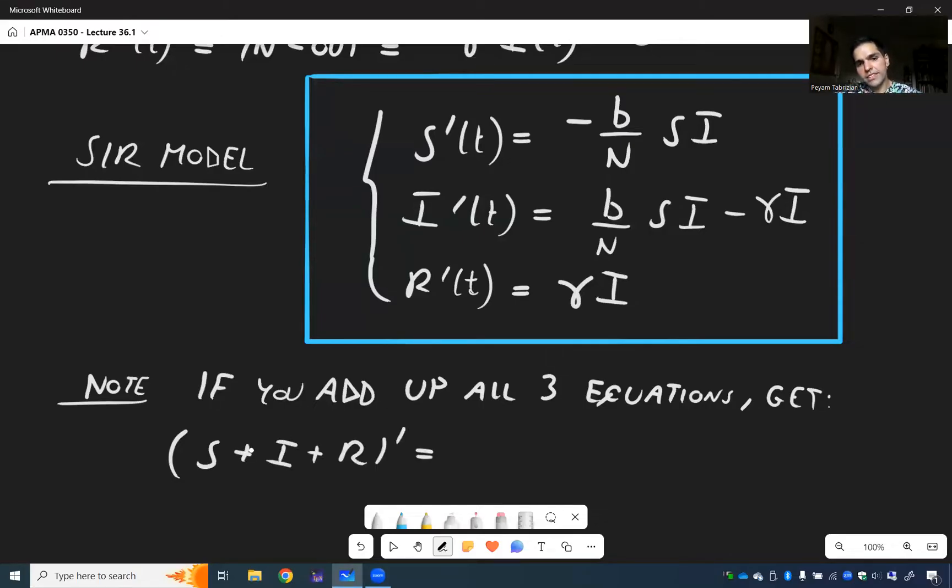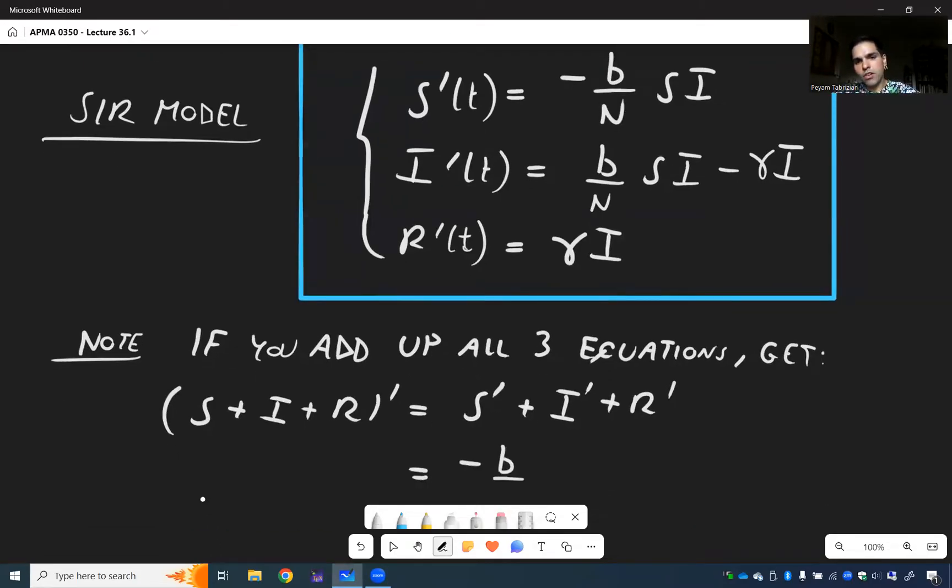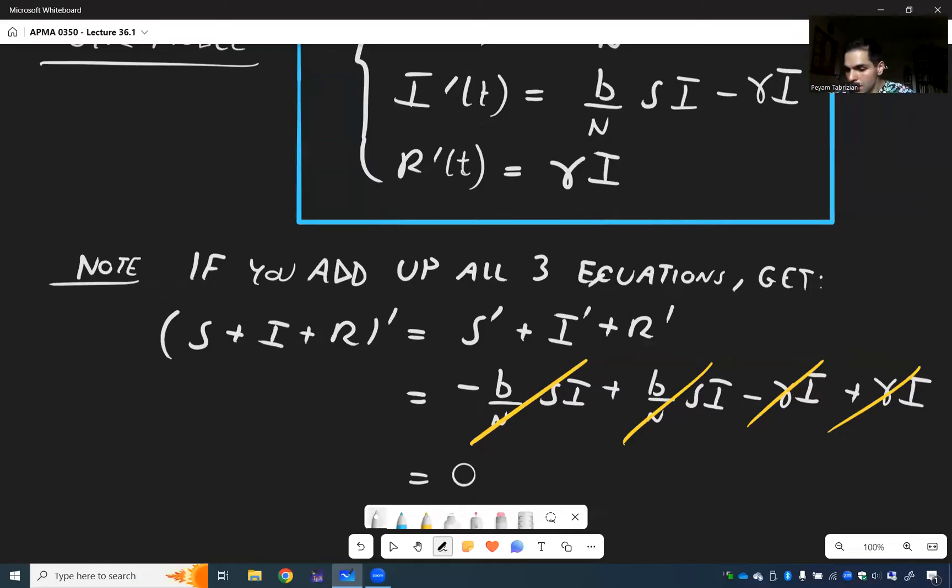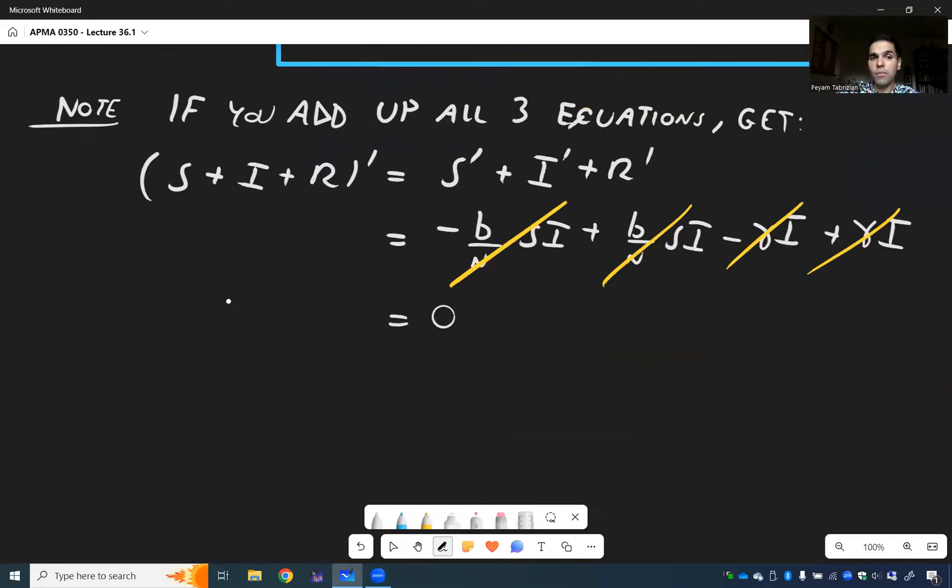So S plus I plus R prime, that's S prime plus I prime plus R prime. And now we can use the ODE. So it's minus B over N S I plus B over N S I minus gamma I plus gamma I. And look, you're all invited to the cancellation party. Because all those terms cancel out and we get zero. Which says that the sum of all those is constant.